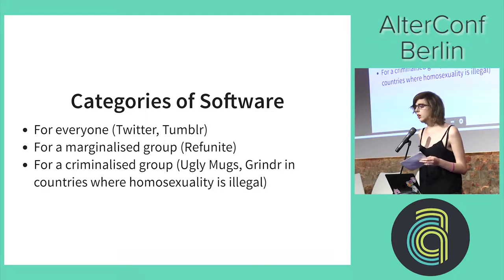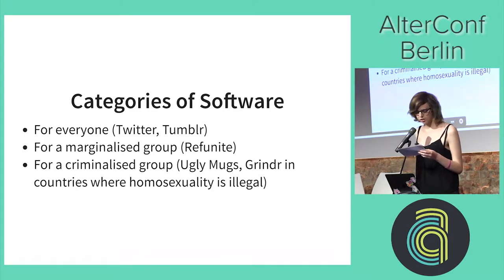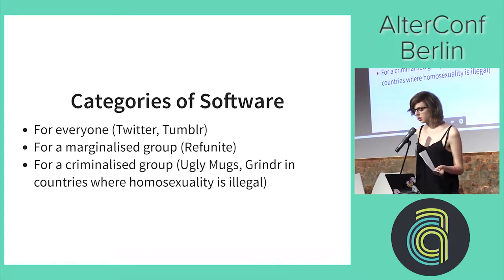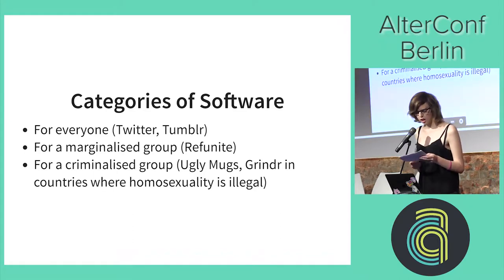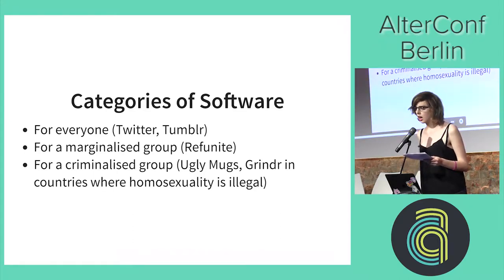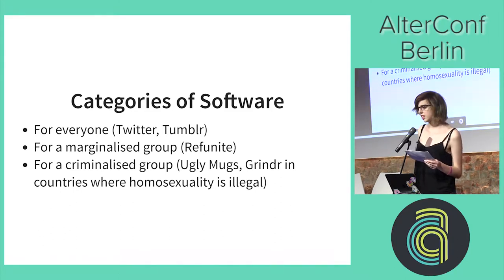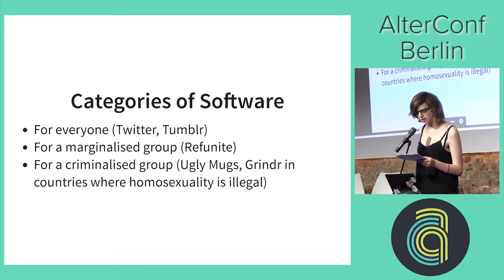We might also want to be building software for a criminalised group. The examples I have for this are Ugly Mugs, which is an app to help protect sex workers — a criminalised group in some places — and also Grindr, which had some issues trying to protect their users in countries where homosexuality is illegal.